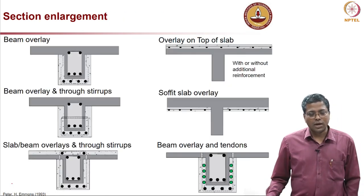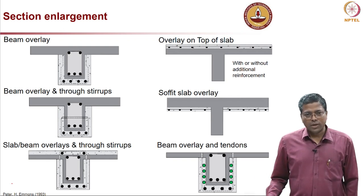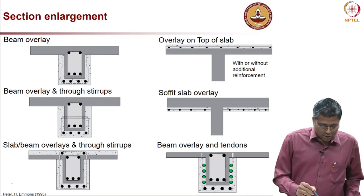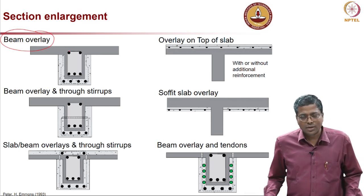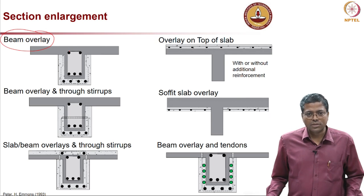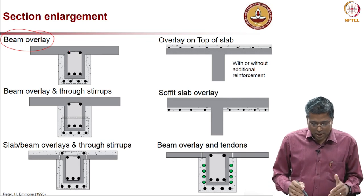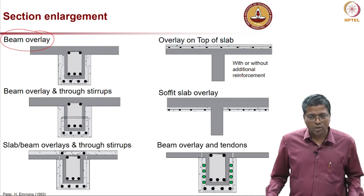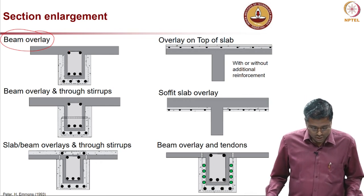First, let us look at section enlargement. I am showing here 6 different types of ways by which we can enlarge the section and enhance the flexural resistance. In all these drawings, the dark grey region indicates the existing concrete system and the lighter grey towards the outer or peripheral region with the typical concrete hatch indicates the repair material or the new concrete.